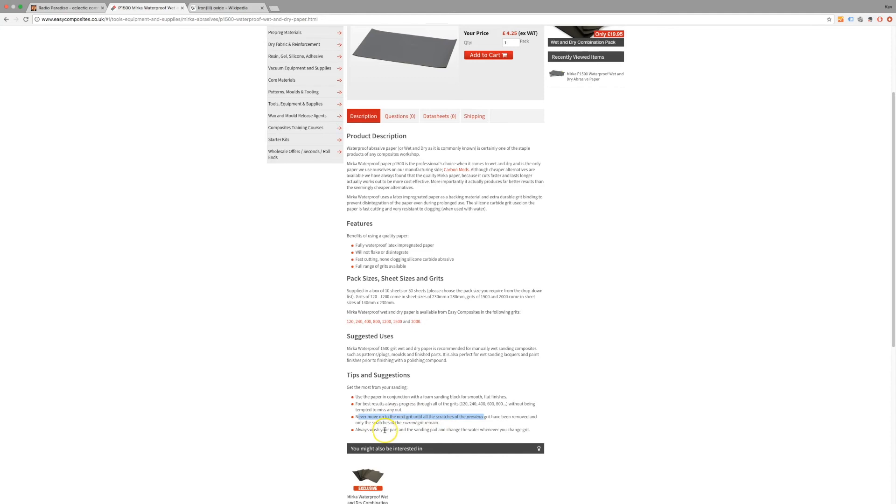Whenever you change grit, you also need to wash the part and the sanding pad. That just gets rid of any old residue of the abrasive ceramic or whatever it is they use. So then once you've done that, you do the finest grit and you wet it through, and it almost creates like a milky type polish. That gives a really good finish which, to be honest, is probably good enough.